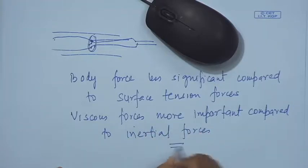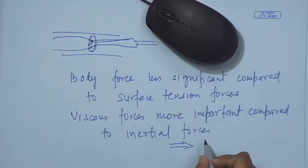When viscous forces are more important compared to inertial forces, it automatically implies that we are dealing with low Reynolds numbers, which are in the laminar flow region. Naturally in this case, since we are primarily in the laminar flow region, the shear effect is very less. As a result, bubbles once formed have very little tendency to coalesce or break down.